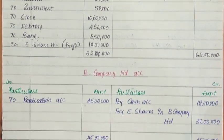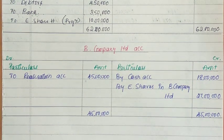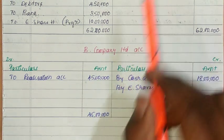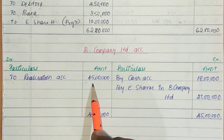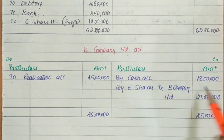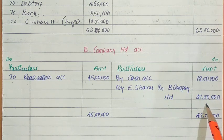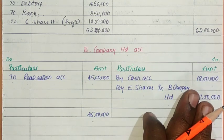Next, I have prepared B company's account. Apart from the realization account, all other accounts will be the same except the realization account entries. In the realization account, the PC of 45 lakhs is already credited. In B company's account: to realization account — PC 45 lakhs. And how it is discharged: by cash 18 lakhs, by equity shares in B company limited 27 lakhs. Total: 45 lakhs.